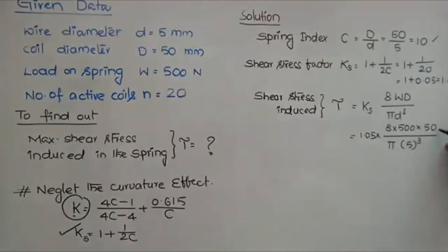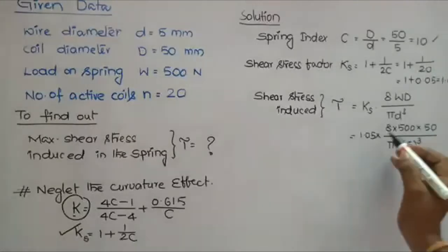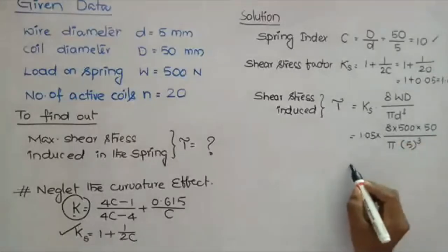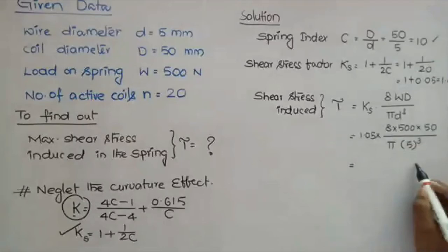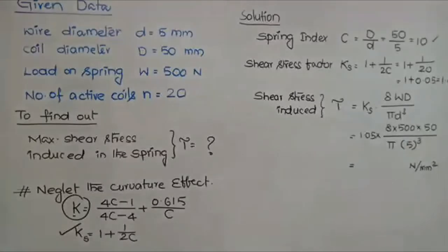This D is in terms of millimeters, and this small d is also in terms of millimeters, so one millimeter cancels with the one millimeter, giving millimeters squared. This is Newtons and this is dimensionless. Finally you get the value in terms of Newton per mm squared. Tell me the value.